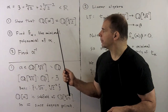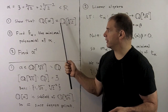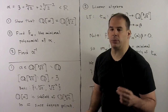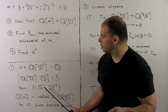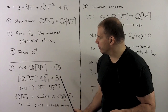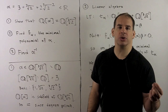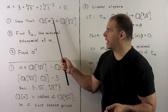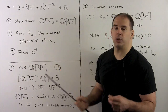For part 1, we have alpha already in Q adjoin cube root of 2, so this is going to be a subfield. Now we want to show they're equal, so let's consider the degree of Q adjoin cube root of 2 over the rationals. This equals 3 because we have the basis 1, cube root of 2, cube root of 2 squared. Because 3 is prime, there are no proper subfields, so any subfield is either the rationals or Q adjoin cube root of 2. Since Q adjoin alpha is a subfield and alpha is not in the rationals, these must be equal, which is what we were trying to show.